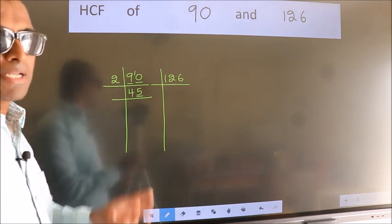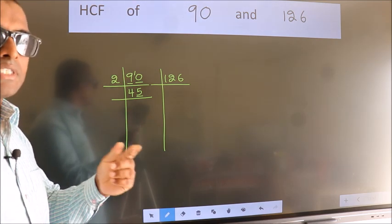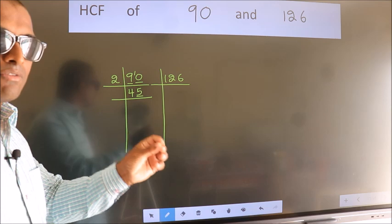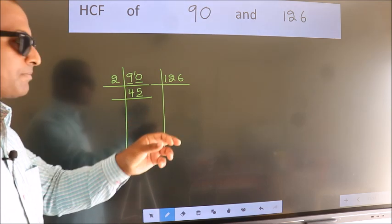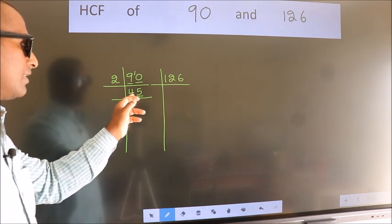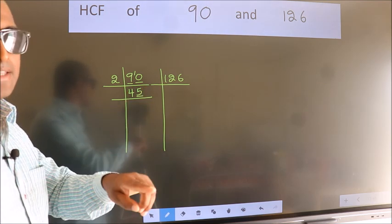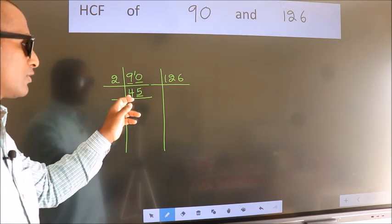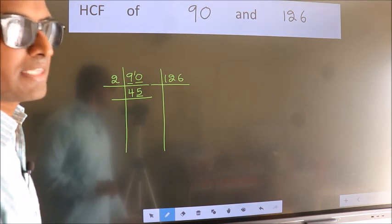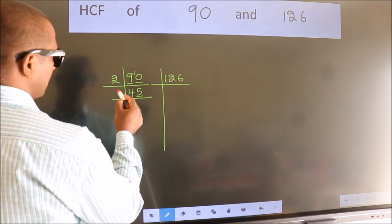Next prime number 3. To check divisibility by 3, we should add the digits. 4 plus 5, we get 9. Is 9 divisible by 3? Yes. So this number is also divisible by 3. Take 3.